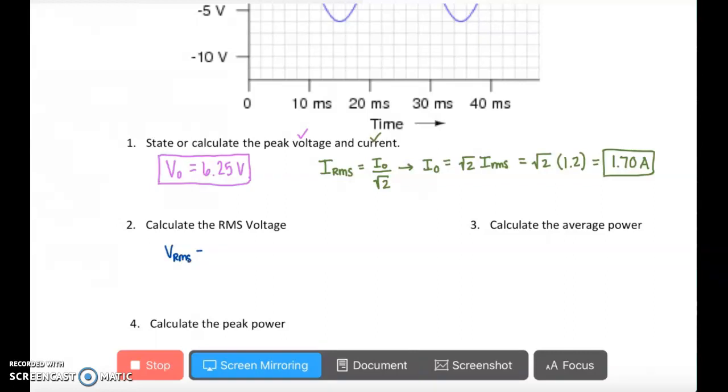the RMS voltage is equal to the peak voltage divided by the square root of 2. Plugging in our peak voltage from before, this comes out to be 4.42 volts.